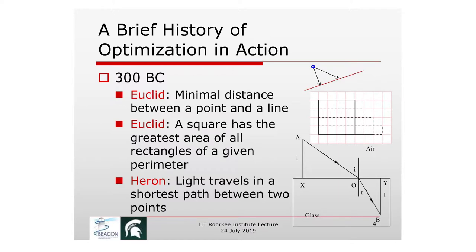You have to go back to 300 BC to find the source of optimization. Euclid talked about: given a line and a point in 2D or 3D, find the point on the line closest to that given point — minimizing the distance. He also discussed: given a piece of wire to form a rectangle, which shape encloses the maximum area? These are simple problems, but people back then were trying to figure out formal methodologies to solve them.